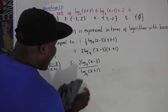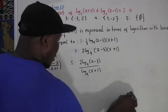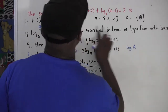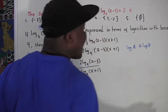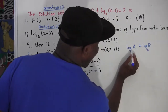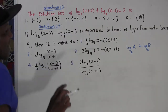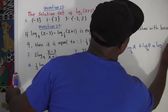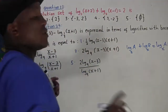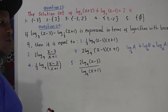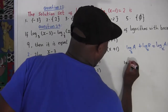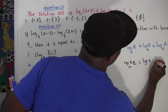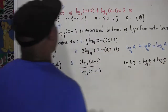Apart from that, you need to know: whenever logs are added, if somebody gives you log a plus log b and they have the same base, you can combine them by multiplying — it becomes log of a times b, one base. So if you want to split log of ab, you can write log a plus log b. This is the law of addition and multiplication for logarithms.